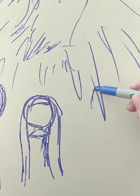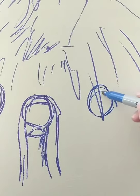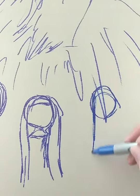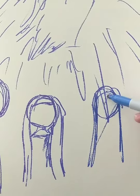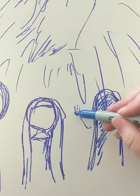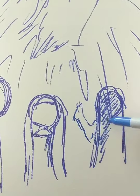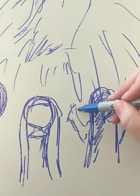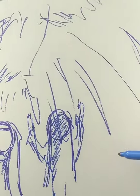Now maybe you want somebody looking in that direction at the bird. So you think about the head but you're not going to map it out — you're just going to come back with a drape. You don't have to worry about their head at all because they're looking that way. And then maybe they're lifting up their hand, so their hand comes up.